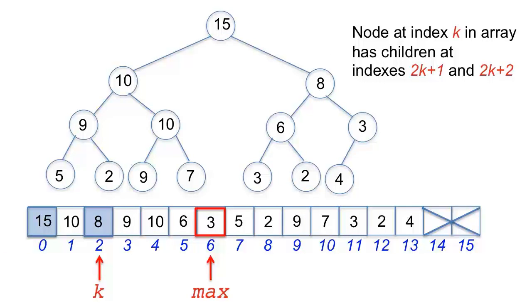Sift-down will continue at the next level, so k takes the place of max, ready for the next iteration. At this level, 3 has only one child, 4. Notice that if there is only one child, it must be the left child, since levels are filled with nodes from left to right without any gaps. So the index l, computed as 2k plus 1, is set to 13. But 2k plus 2, which is 14, is outside the bounds of the array, which implies there is no right child.